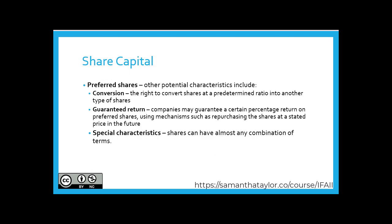More about preferred shares. Other potential characteristics include conversion, which is the right to convert a share at a predetermined ratio into other types of shares. There is also guaranteed return — companies may guarantee a certain percentage of return on preferred shares using mechanisms such as repurchasing the shares at a stated price in the future. Preferred shares can often look a lot like debt, linking back to when we discussed substance over form — we will discuss more about this in a later chapter. These special characteristics can have almost any combination; for example, a class of preferred shares may be cumulative and have a conversion feature.